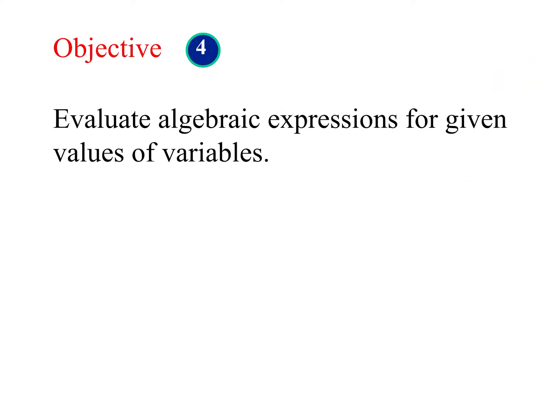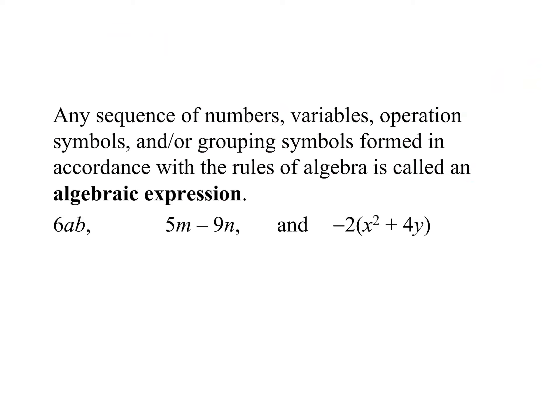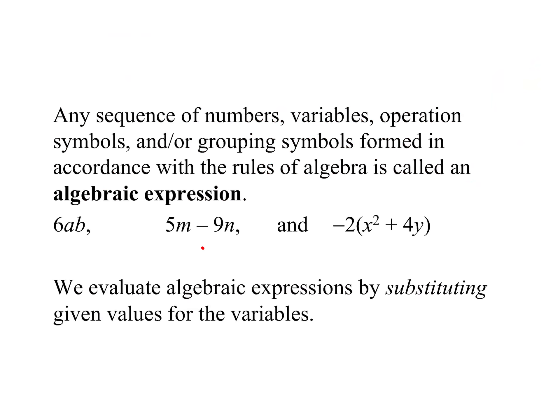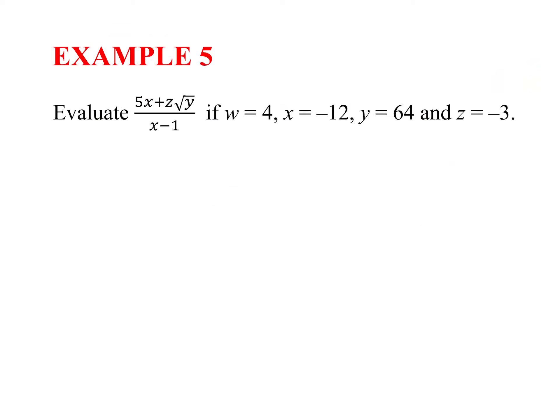Next: evaluate algebraic expressions for given values of variables — this is just plugging in. An algebraic expression means there's no equal sign. We're going to substitute numbers for the variables and simplify using order of operations. For example, evaluate the expression when W is 4, X is negative 12, Y is 64, and Z is negative 3.